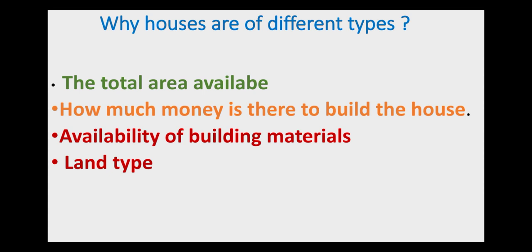The fourth reason is land type. There are different types of lands on the earth — some lands are plain and some are hilly. If you have flat, plain land you will build a different kind of house, and if you have land in a hilly region you will build a different kind of house suited to that terrain. So depending upon these four factors — total area, money, availability of building materials, and land type — we build different types of houses.